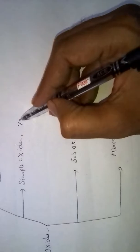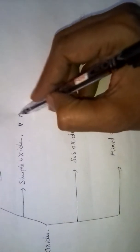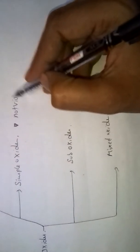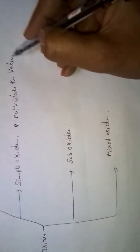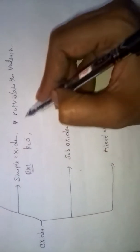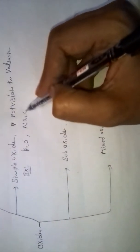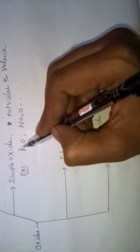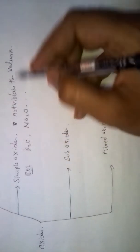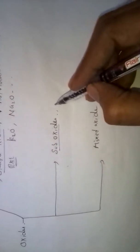Simple Oxides follow the valency rule — they do not violate the valency rule. Examples of simple oxides are K2O, Na2O and so on. Here, oxygen valency is 2. It combines with 2 potassium atoms at valency 2, so it does not violate the rule. These oxides are called Simple Oxides.